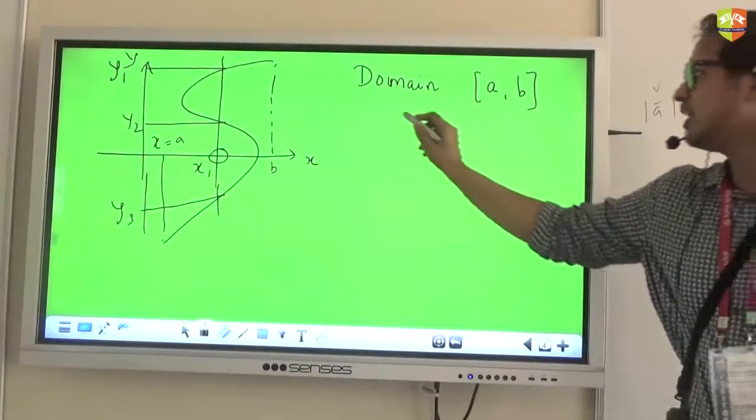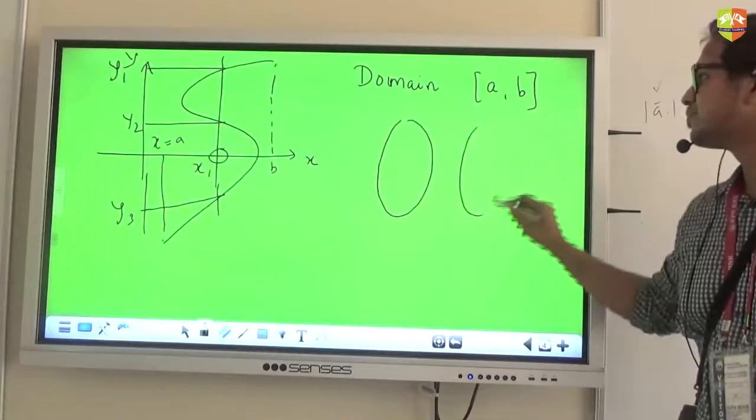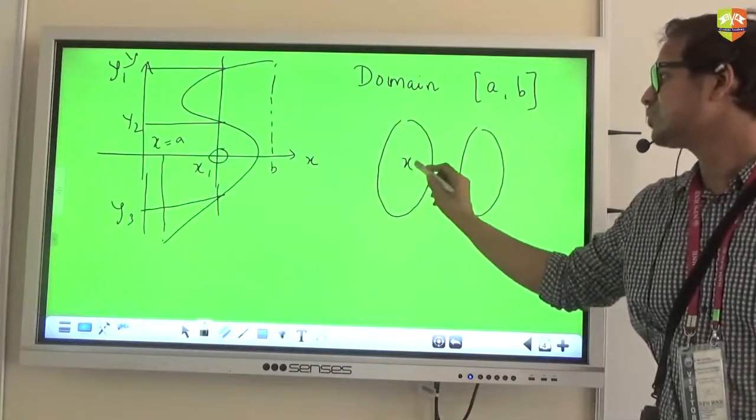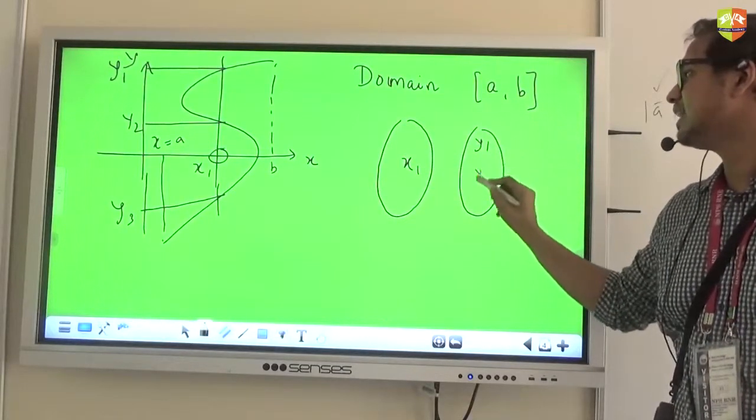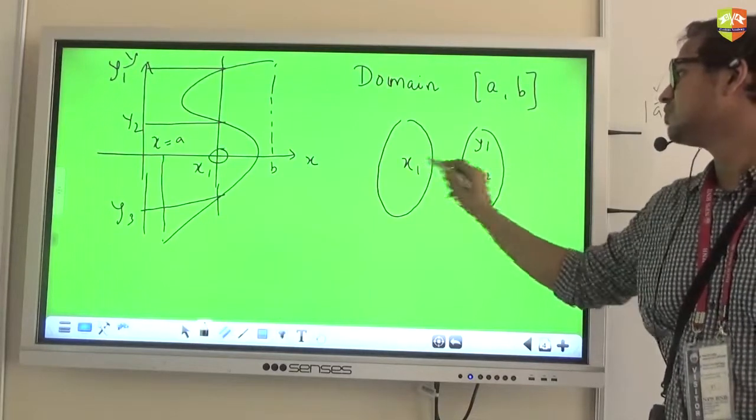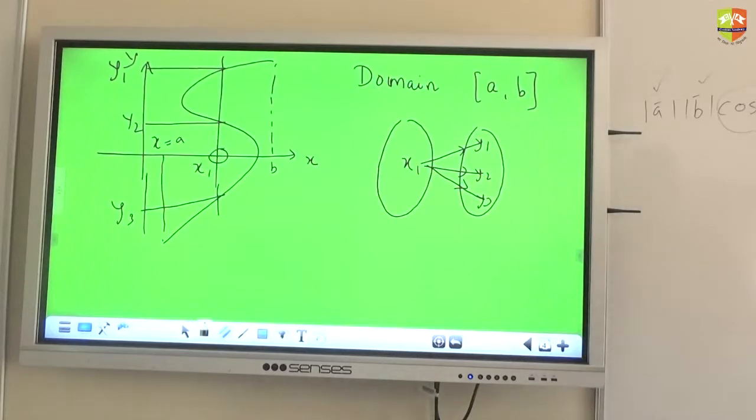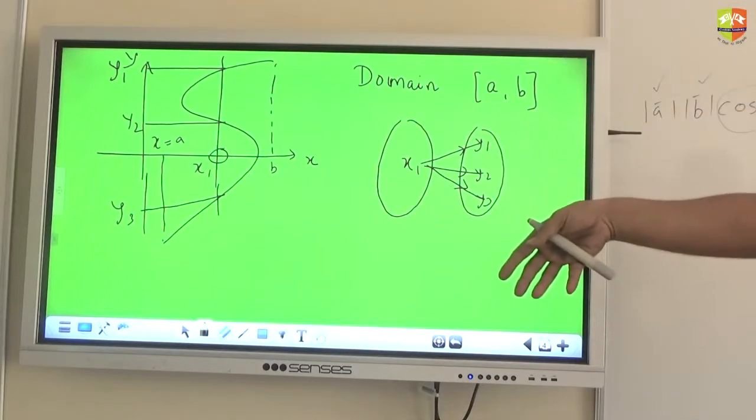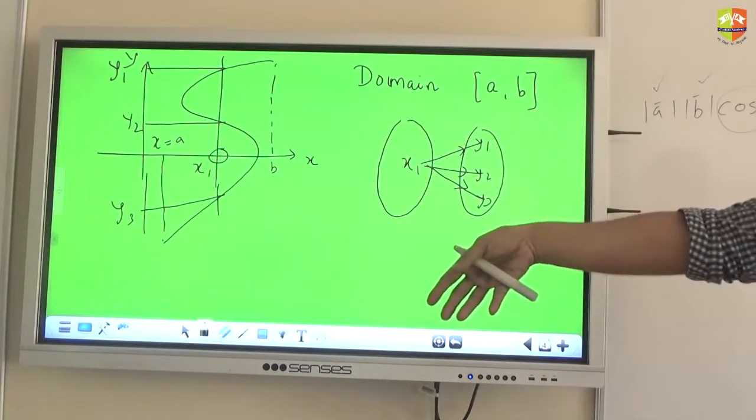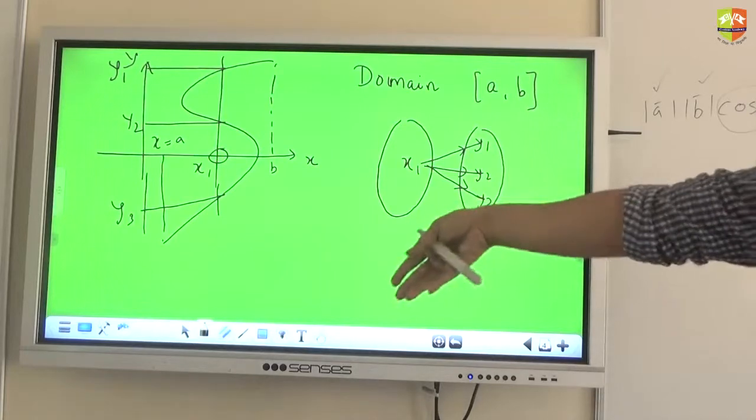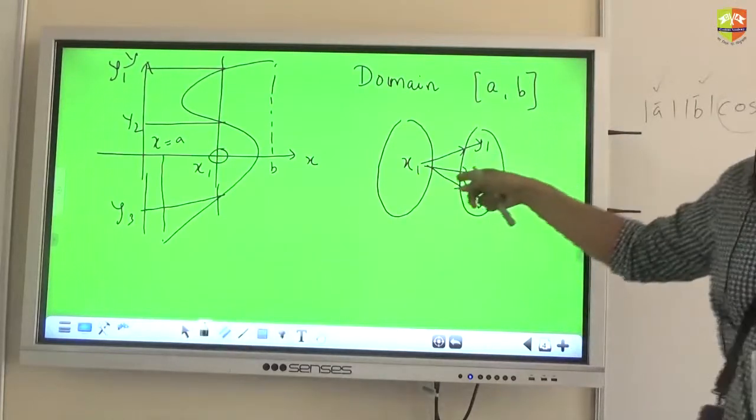That means if I draw an arrow diagram, then there is an element x1 which is mapping simultaneously to multiple values. This is not allowed in a function. That means you are putting a toast bread and you are getting three different responses from the machine on three different days. Of course you will throw out that machine, right?